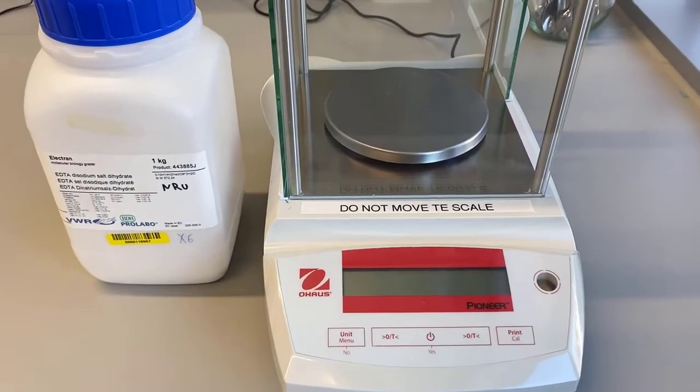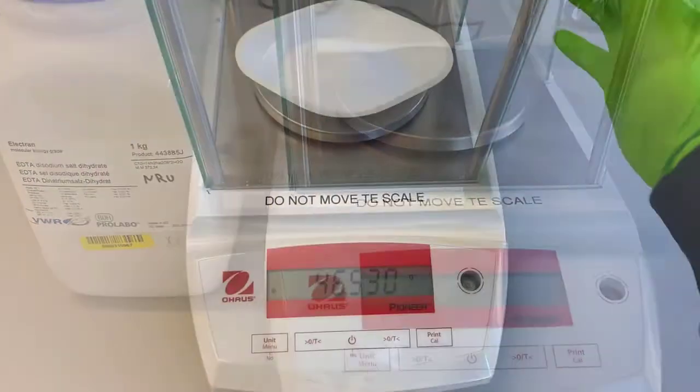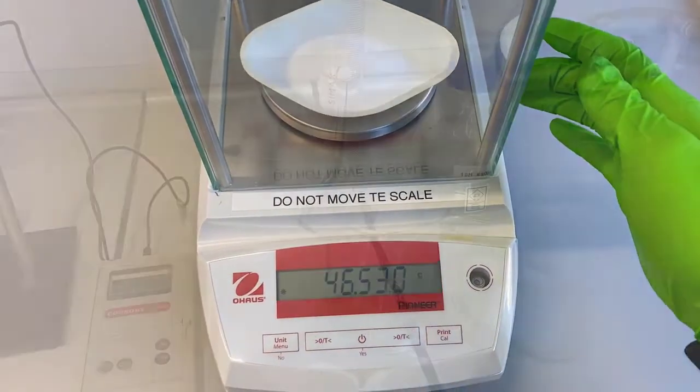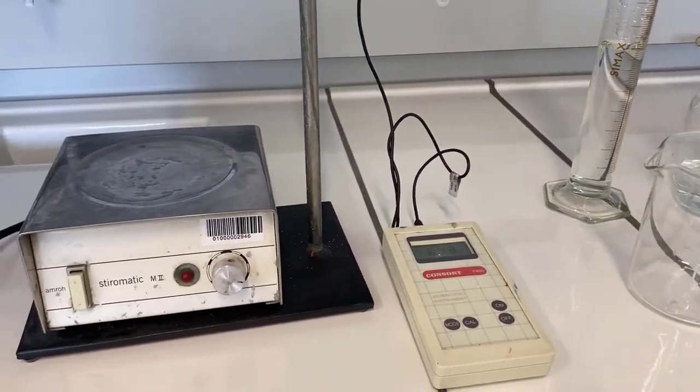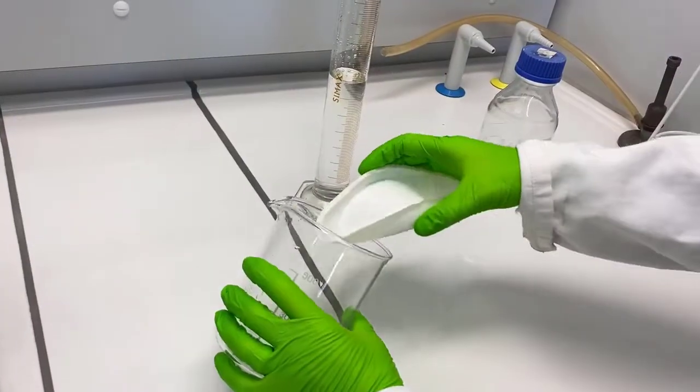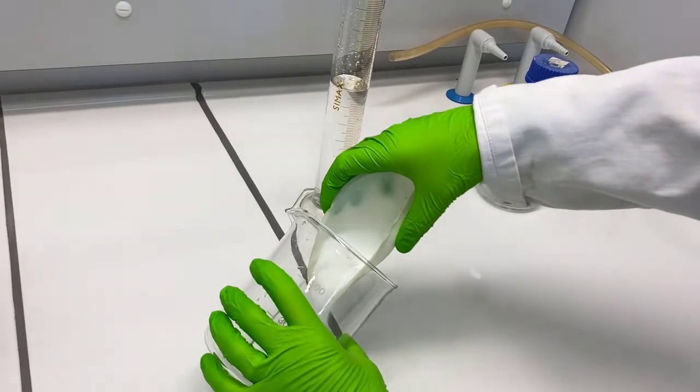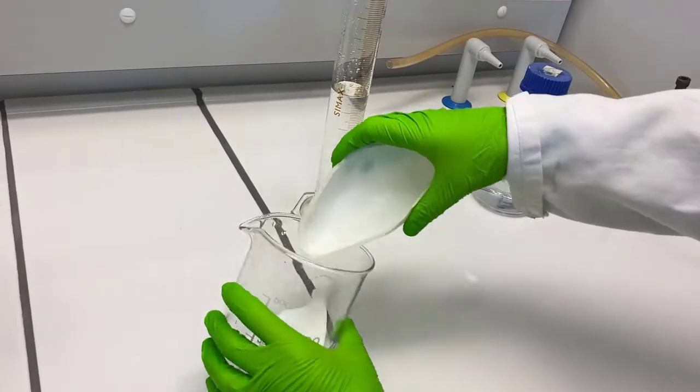Now let us first weigh the required EDTA powder to make our 250 ml of 0.5 molar EDTA. Now assemble all the requirements in a fume hood, and then dissolve the EDTA powder in about 150 ml of water first.